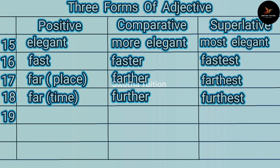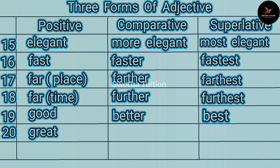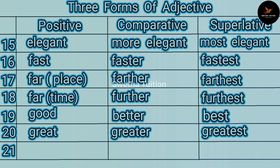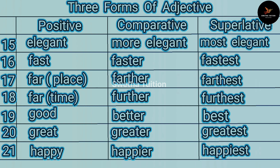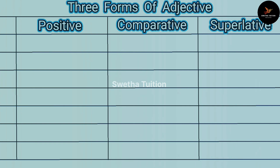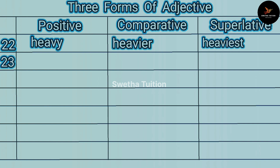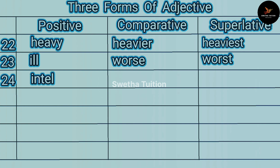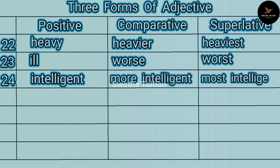Number nineteen: good, better, best. Number twenty: great, greater, greatest. Number twenty-one: happy, happier, happiest. Number twenty-two: heavy, heavier, heaviest. Number twenty-three: ill, worse, worst.